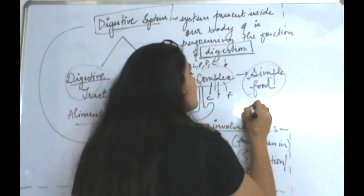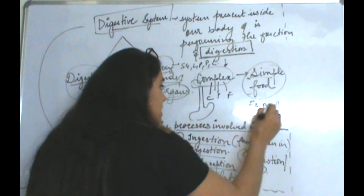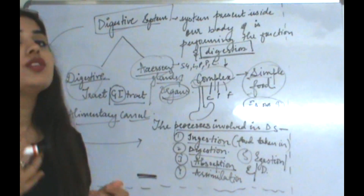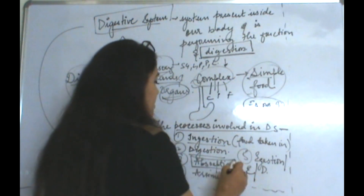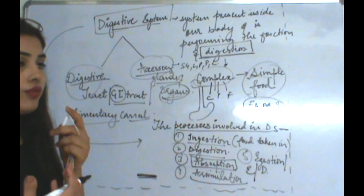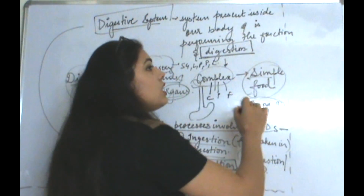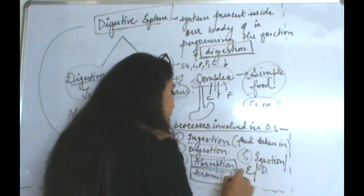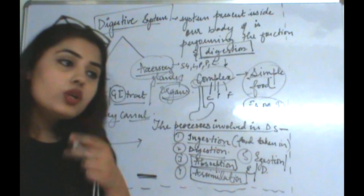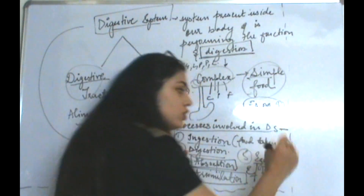Digestion is the conversion of complex food to a simple food substance. Whatever food we eat — carbohydrates, proteins, or fats — this complex food is broken down into simpler substances such as fatty acids, amino acids, glycerol, etc. These simpler substances are then absorbed by the body cells, and that is how we get energy. Next is assimilation — wherever energy is required in the body, for example during peristalsis movement in the esophagus, the absorbed nutrients in the form of fatty acids, amino acids, and glycerol are sent to those areas.